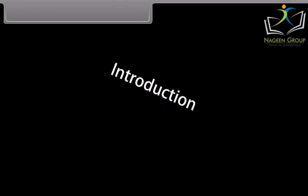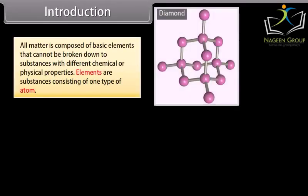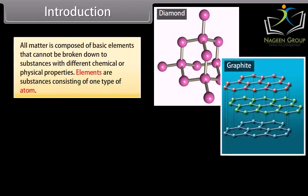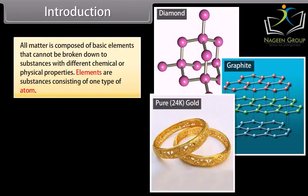Introduction. All matter is composed of basic elements that cannot be broken down to substances with different chemical or physical properties. Elements are substances consisting of one type of atom.